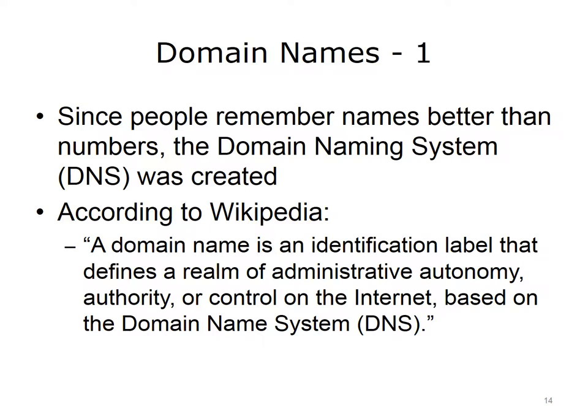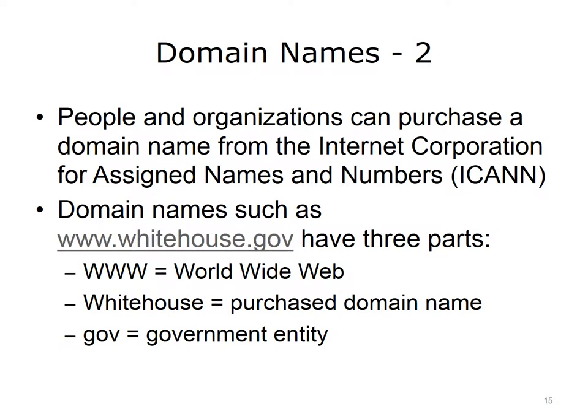Therefore, in the example of a domain name www.whitehouse.gov, this domain name tells us that the White House is responsible for the administration of this website. People and organizations can purchase a domain name from the Internet Corporation for Assigned Names and Numbers, or ICANN. Domain names are comprised of three distinct pieces. The 'www' portion indicates this is a name associated with the World Wide Web. The domain name 'whitehouse' indicates a purchased domain name. The suffix 'gov' indicates a government entity type.